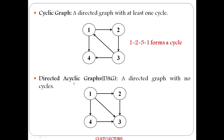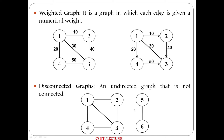Next is directed acyclic graph, or DAG. If a directed graph has no cycle, it is called a directed acyclic graph. This is an example of a DAG. Next is weighted graph — when a graph has weights assigned to its edges, it is called a weighted graph. This is a weighted undirected graph and this is a weighted directed graph.